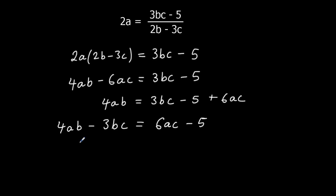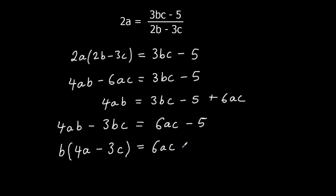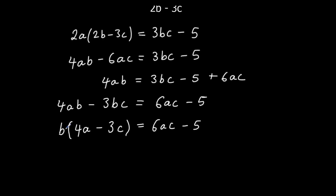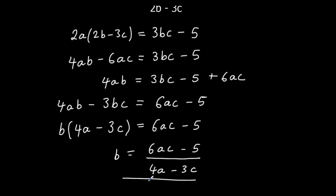So I've got my b terms on the same side and I can factorize out b: b times 4a makes 4ab and b times 3c makes 3bc, so b times (4a minus 3c). To get rid of the times I divide both sides by (4a minus 3c), giving b equals (6ac minus 5) all over (4a minus 3c). And there's the answer.